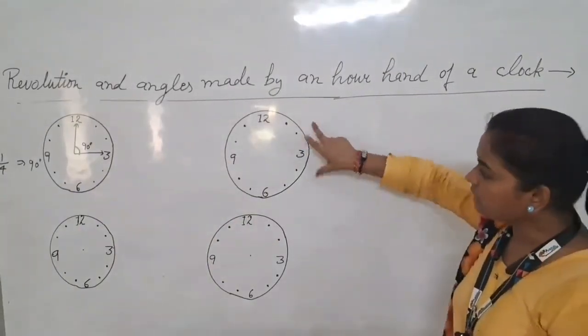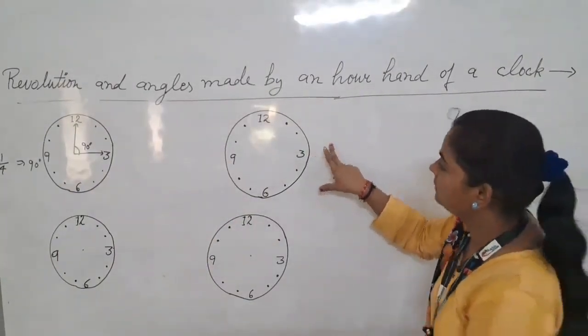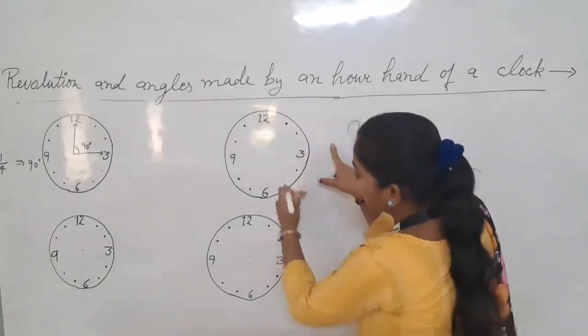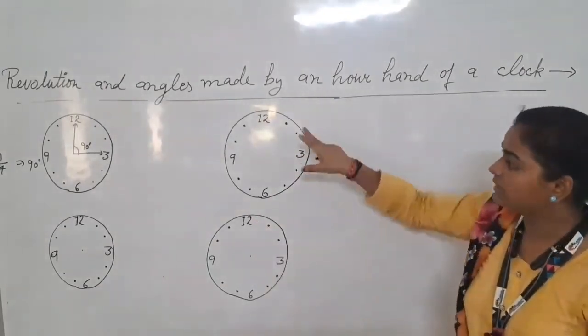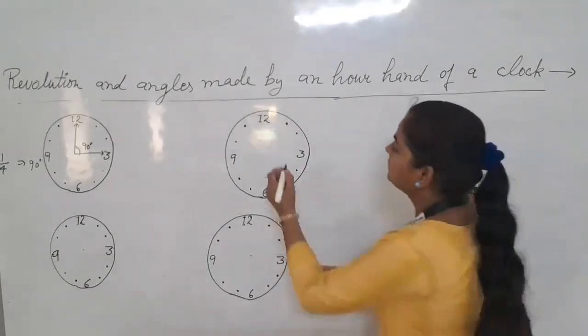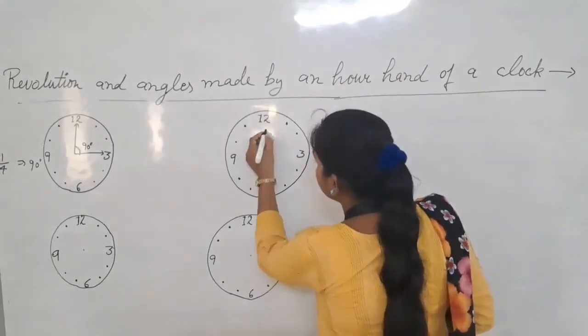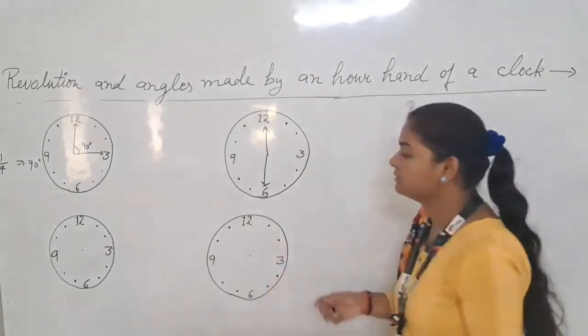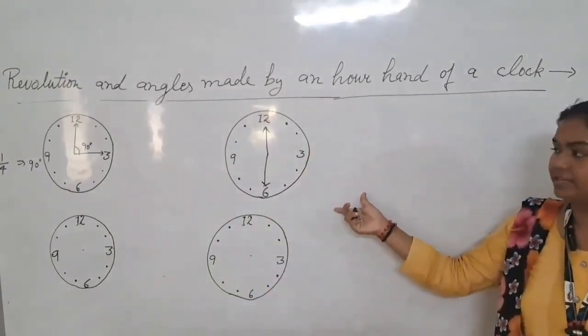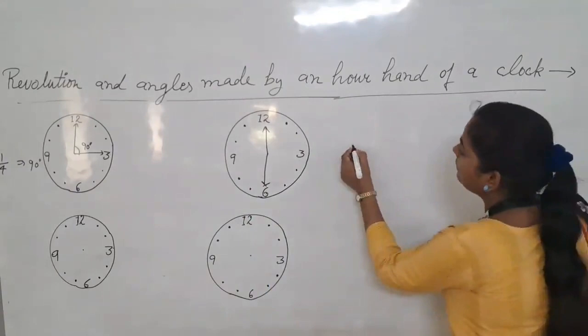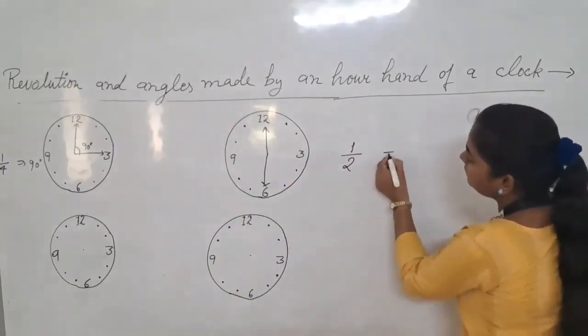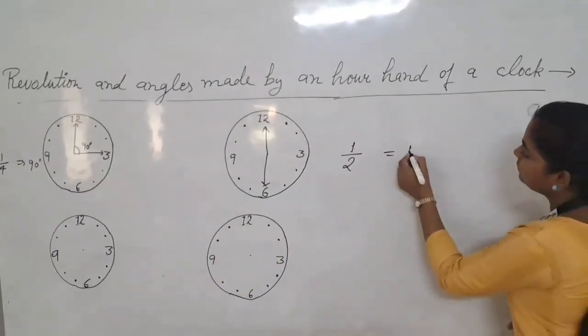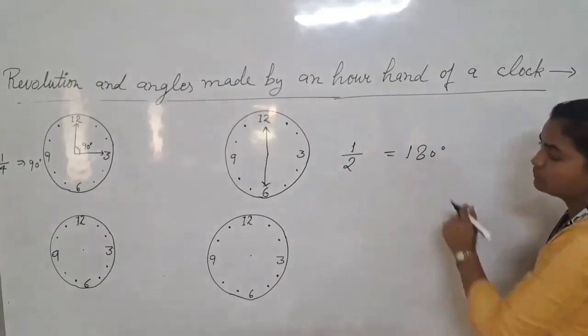Second, half revolution. North moves to south direction. Half revolution moves the angle to a straight angle, 180 degrees. Half revolution means straight angle moves.